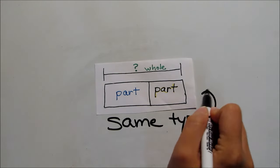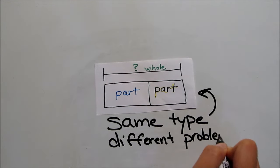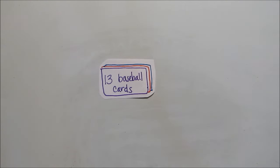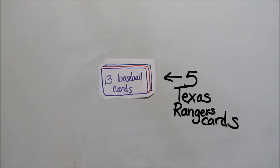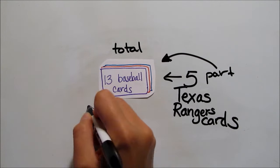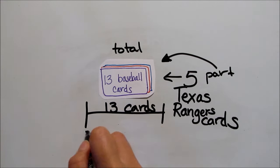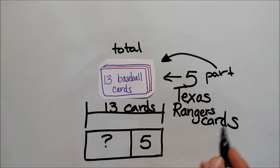Now let's see how we can use the same type of strip diagram to solve a different type of problem. If Jose has 13 baseball cards and five of them are Texas Rangers, then the 13 cards are his total and the five Rangers are a part of the total. They're part of the 13 baseball cards he has. This time we have a number on the total bar and a number for one piece,